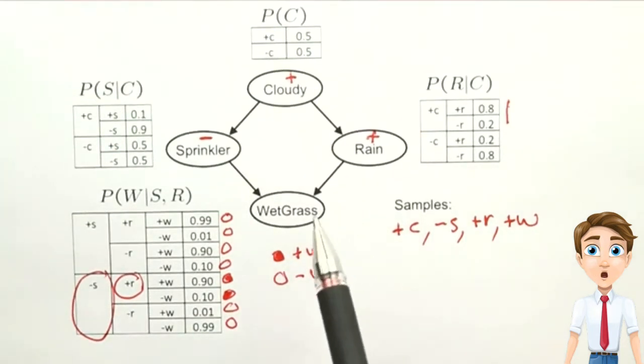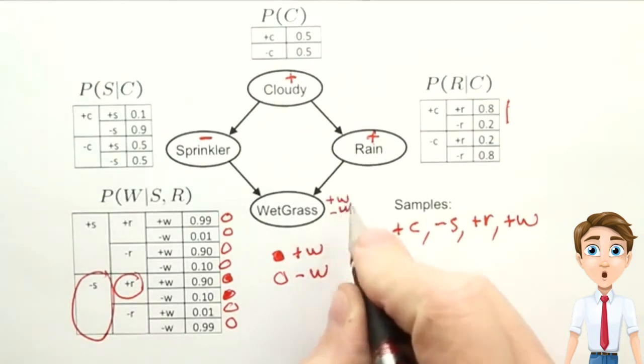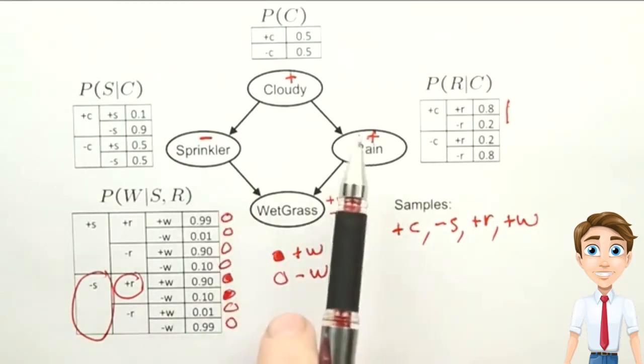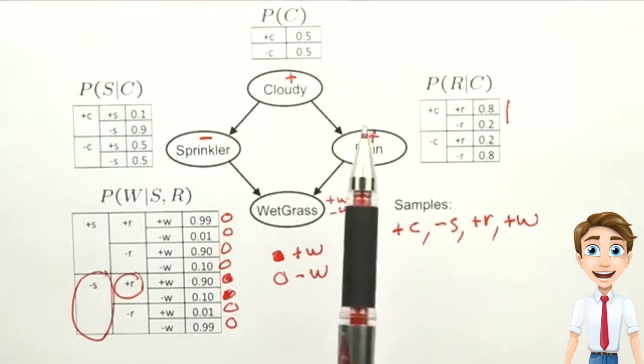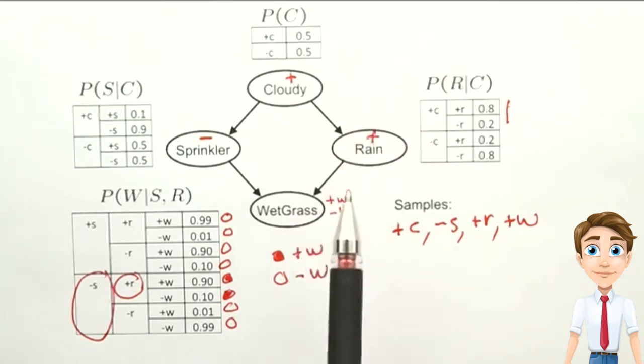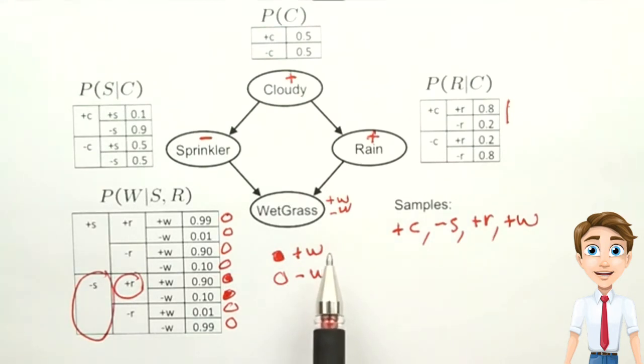Now the probability of sampling a particular variable, choosing a plus W or a minus W, depends on the values of the parents. But those are chosen according to the conditional probability tables. So in the limit, the count of each sampled variable will approach the true probability. That is, with an infinite number of samples, this procedure computes the true joint probability distribution. We say that the sampling method is consistent.